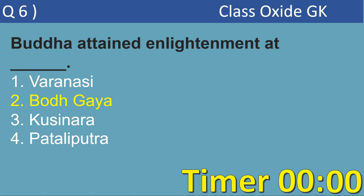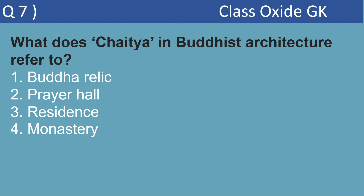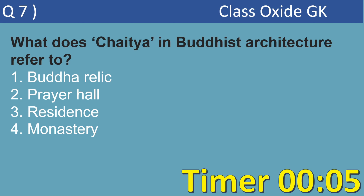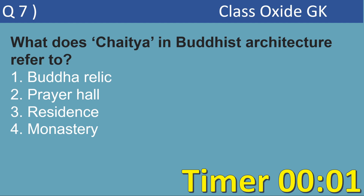Next MCQ. What does Chaitya in Buddhist architecture refer to? Options are Buddha relic, prayer hall, residence, monastery. This is again an important question. The correct answer is option number 2, prayer hall.